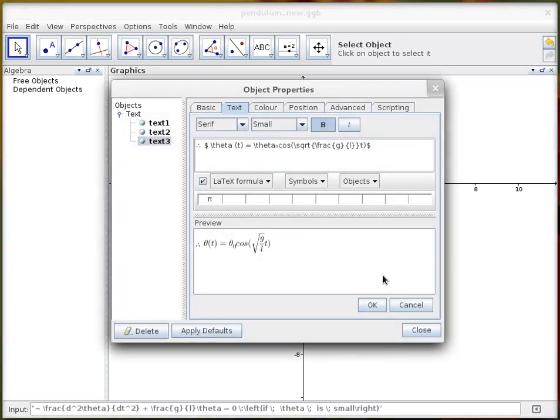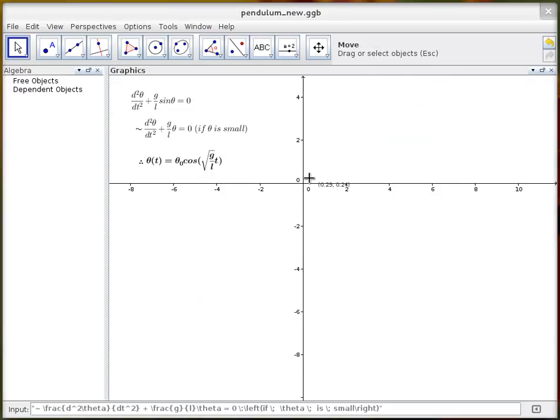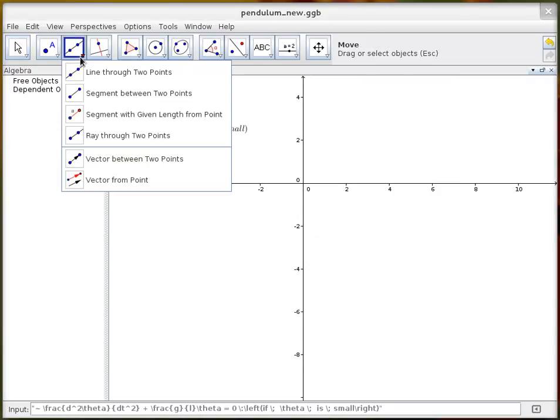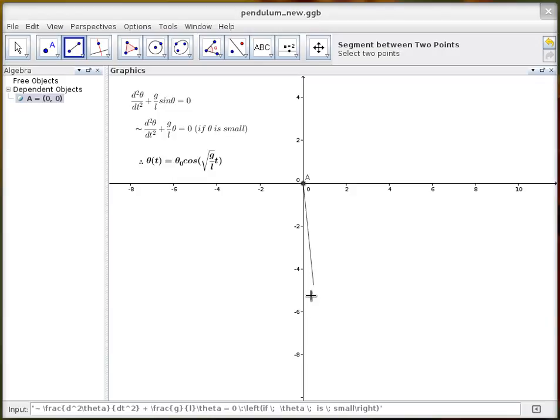Make that into bold. There we go. Right, so the first step is to just draw a piece of string and to do that I'm going to use the segment tool. So I'll select that, click about there and there, and I'm going to get rid of the axes because we don't need them.